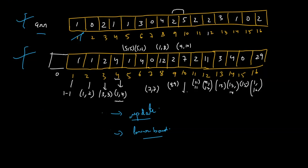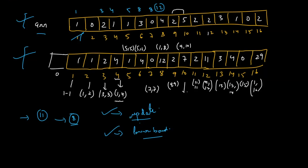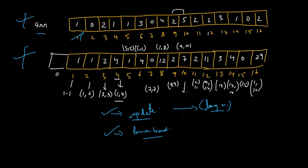The context in which binary lifting is used is: let's say you have updates and you want to find the lower bound of a prefix sum — for example, the lower bound of 11. The prefix sums go: 1, 3, 4, 5, 8, 8, 12. So you don't have 11, but you have 12 which is greater than 11. The first element that is either equal to 11 or greater than 11 is your lower bound — that is index 8. The update operation can be done in O(log n) as covered in the Fenwick tree tutorial.